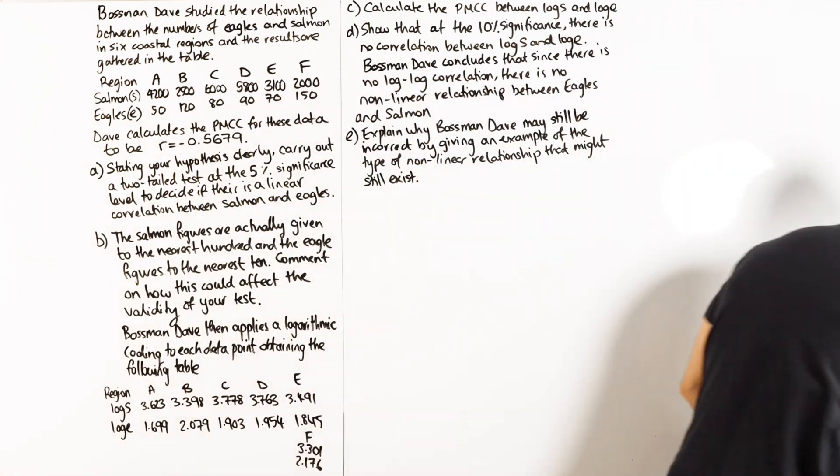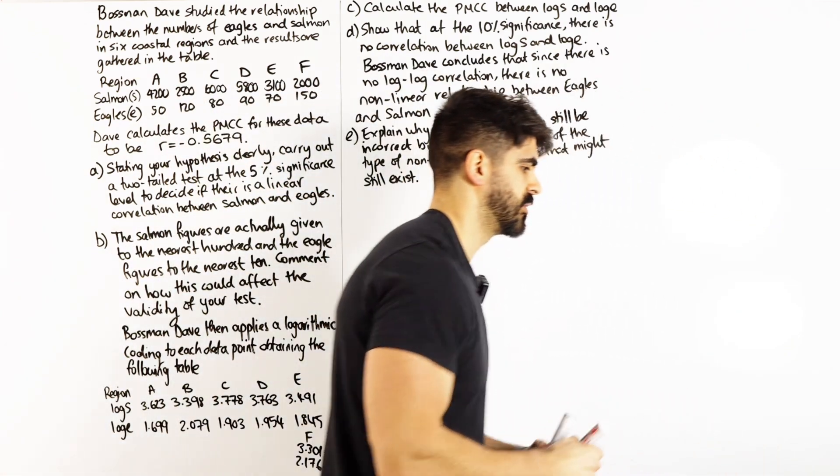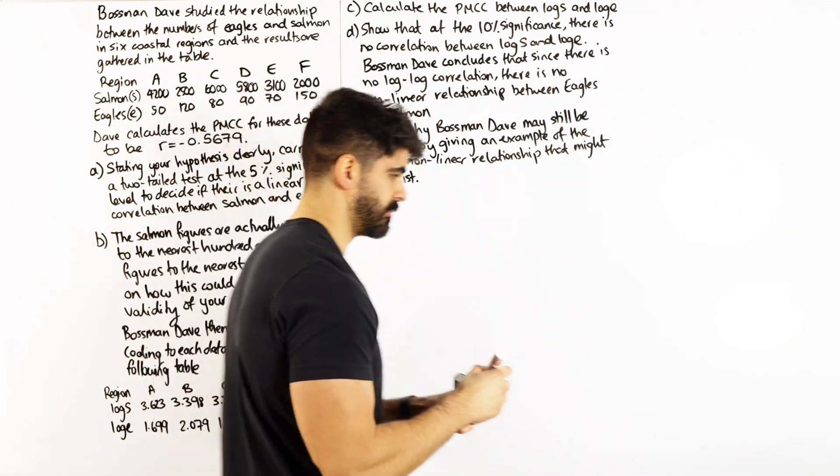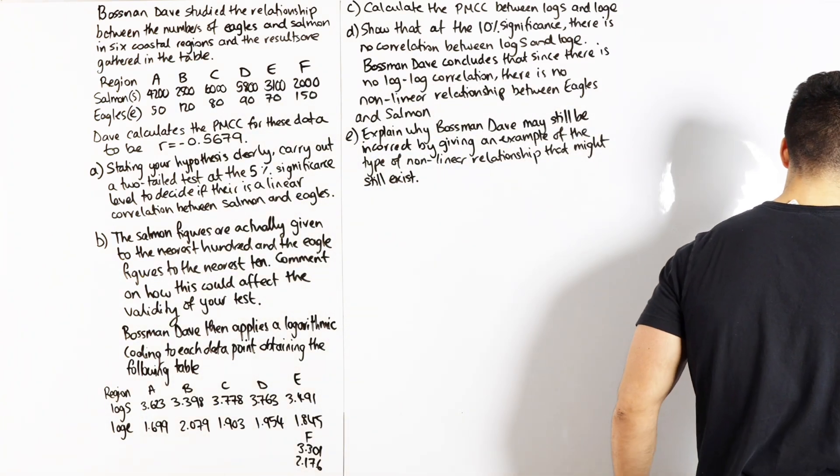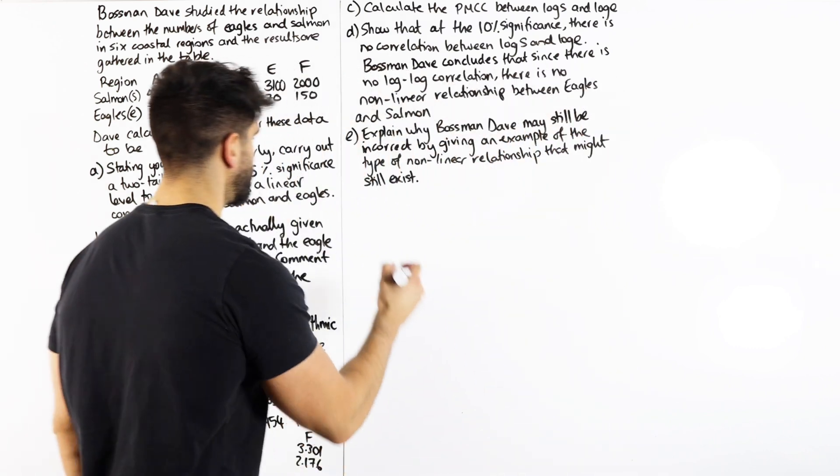Dave calculates the PMCC, the product moment correlation coefficient, for these data to be 0.5679. Writing all this has made me bug out. Hopefully Dave knows how to calculate this properly using the calculator. So part A.